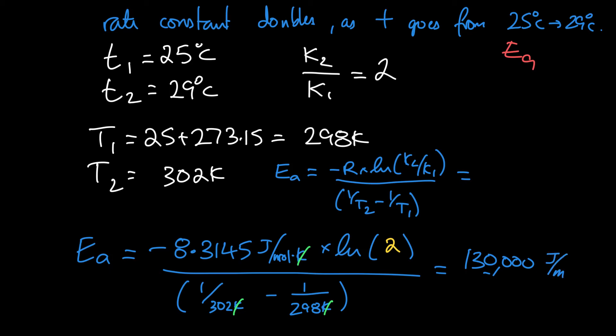And so that looks pretty nice. In fact, we've got thousands of joules per mole. So instead of writing 130,000, we can write 130 kilojoules per mole using the SI prefix kilo for 1,000, and that would be our activation energy.